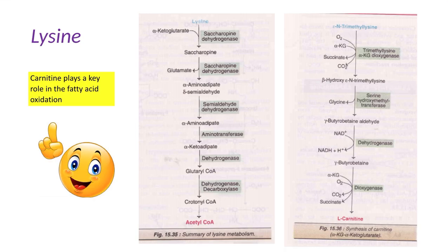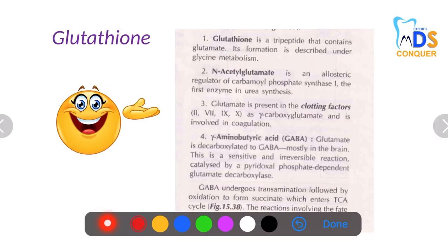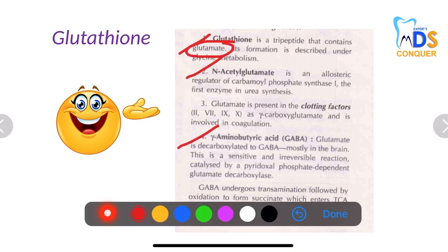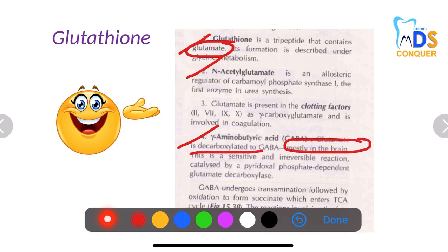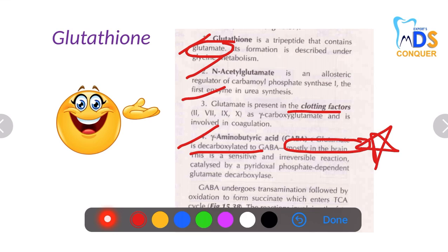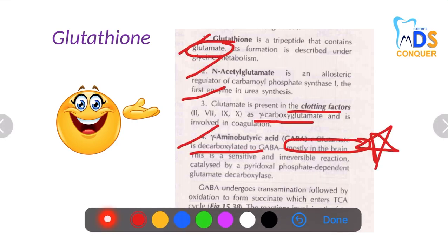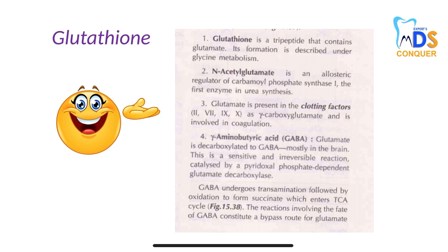Next, lysine: carnitine plays a very important role in fatty acid oxidation. This is just a summary of lysine metabolism and carnitine. Glutathione is a tripeptide that contains glutamate. Regarding acetyl glutamate and amino butyric acid: glutamate is decarboxylated to GABA, which is present mostly in the brain. Glutamate is also present in clotting factors 2, 7, 9, and 10 as gamma-carboxyglutamate and is involved in coagulation. Glutathione is a tripeptide which contains glutamate.